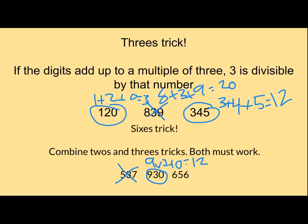656, so far if I check with twos, it's an even number. So that works nicely. So now I do 6 plus 5 plus 6. That's going to give me 17, which is not divisible by 3.